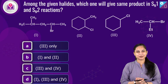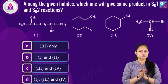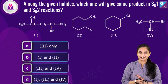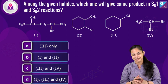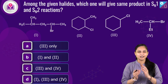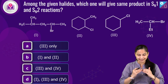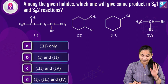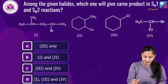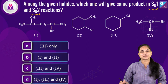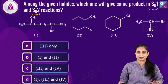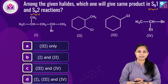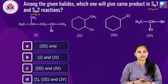Today we're discussing a question from alkyl halides, specifically the substitution reaction dealing with SN1 and SN2 reactions. The question is: among the given halides, which one will give the same product in SN1 and SN2 reactions? For SN1 — substitution nucleophilic unimolecular — the reaction takes place in two steps: first, formation of a carbocation, and second, attack of the nucleophile.